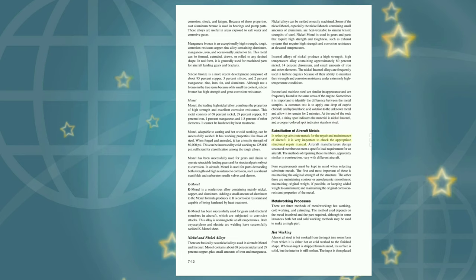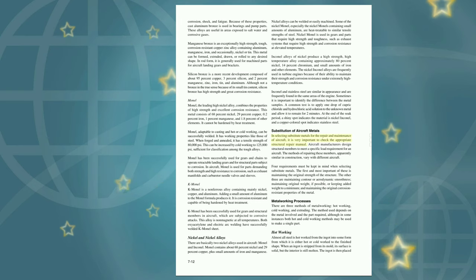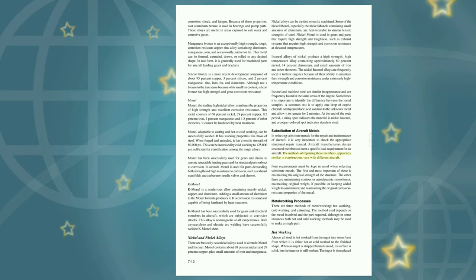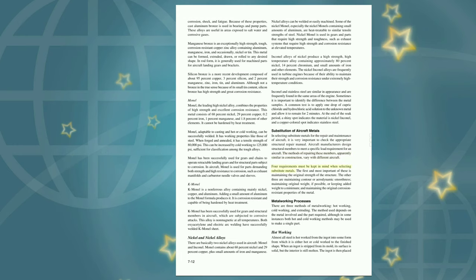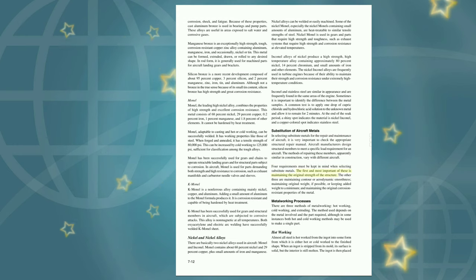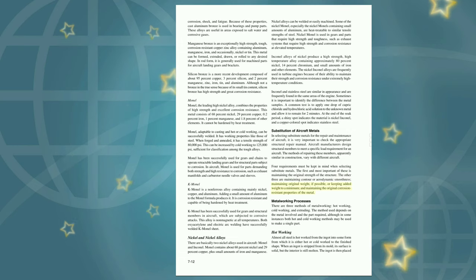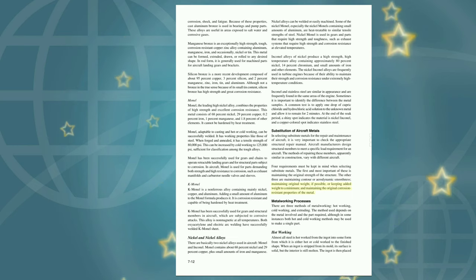Substitution of aircraft metals: When selecting substitute metals for the repair and maintenance of aircraft, it is very important to check the appropriate structural repair manual. Four requirements must be kept in mind: maintaining the original strength of the structure (the first and most important), maintaining contour or aerodynamic smoothness, maintaining original weight or keeping added weight to a minimum, and maintaining the original corrosion-resistant properties of the metal.